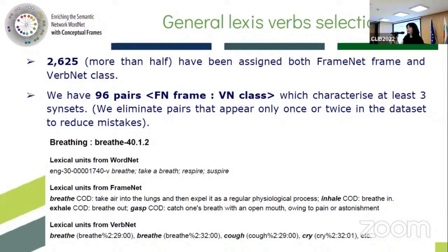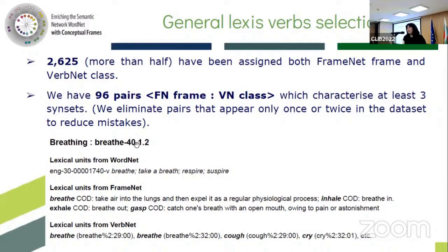We came up with more than 2,500 verbs — around 2,600 to 2,700 — that have already been assigned both a FrameNet frame and a VerbNet class. For these verbs, we also have 96 pairs of FrameNet frame and VerbNet class correspondences. We chose only those assigned to three or more synsets. An example is the 'Breathing' frame and the 'breathe' class in VerbNet, along with examples of verbs assigned those frames in WordNet.